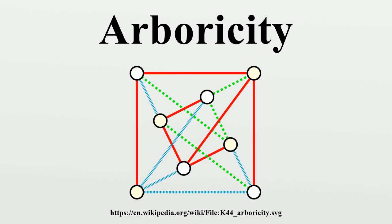The arboricity of an undirected graph is the minimum number of forests into which its edges can be partitioned. Equivalently, it is the minimum number of spanning forests needed to cover all the edges of the graph.